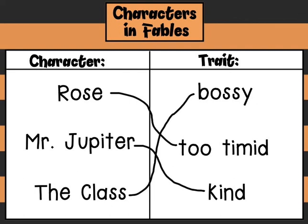So, when we think about characters in a fable, we can have characters that have positive traits or characters that have negative traits. In fables, a negative trait is called a foible. As you're reading your fables today and doing your exit card, make sure you think about what types of character traits your characters have.